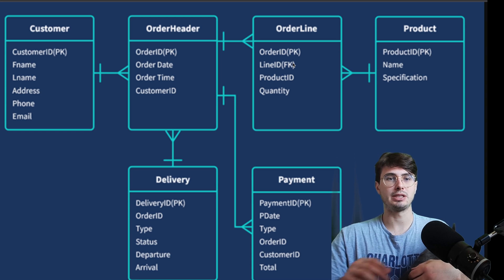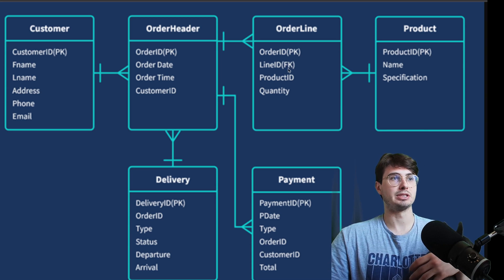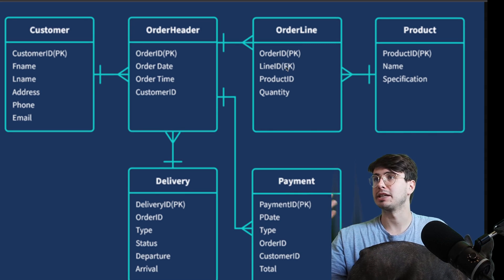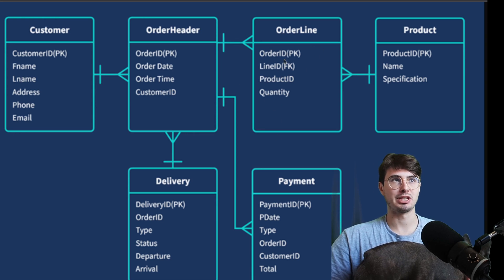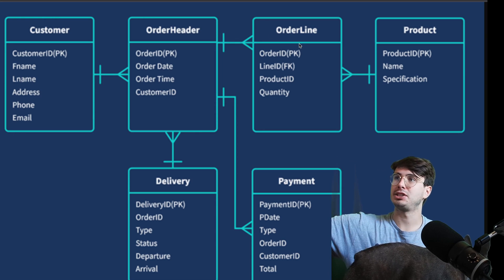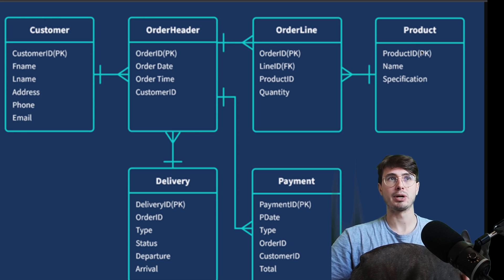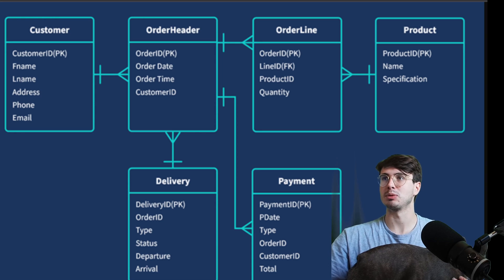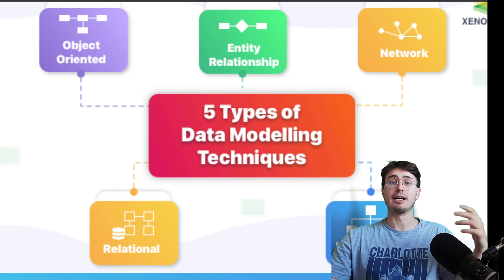Under order line, you have a primary key — line ID — which is a foreign key. This means it matches a primary or alternate key inherited from another table. If you need to bring information from a separate database, you can use foreign keys that match another unique identifier. Over here you have the product table with product ID, name, and specifications — all the information you need about a product, since many people are going to be buying and referencing it.